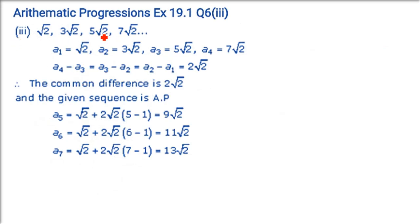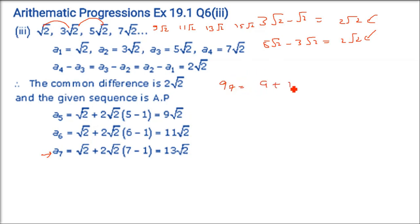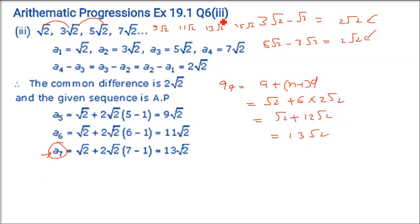Third AP: √2, 3√2, 5√2, 7√2. Check: 3√2 - √2 = 2√2, 5√2 - 3√2 = 2√2. Common difference is 2√2, so this is an AP. The next terms are 9√2, 11√2, 13√2. Using the formula for a₇: a + (n-1)d = √2 + 6(2√2) = √2 + 12√2 = 13√2.